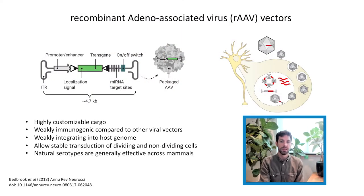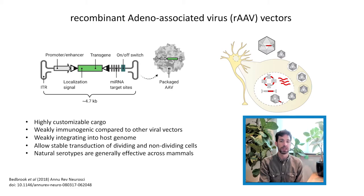Let's step back a bit to go over why AAV are the preferred viral vector. AAV are highly customizable. Inside those terminal ITRs, you have over four kilobases for nearly whatever you like. They have an excellent safety profile compared to other vectors, access dividing and non-dividing cells, and are effective across mammalian species. These factors have made AAV especially attractive for targeting the nervous system, which we'll mostly focus on today.